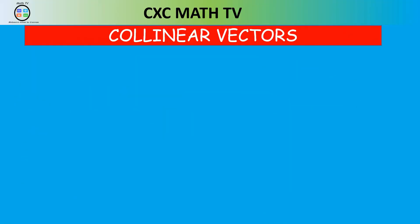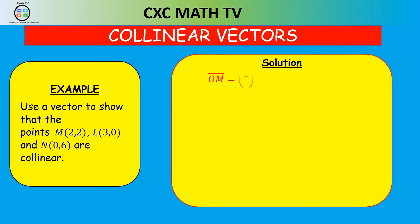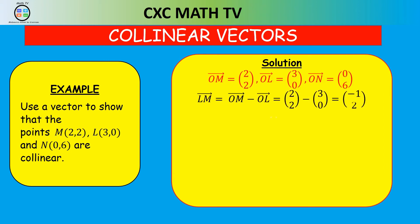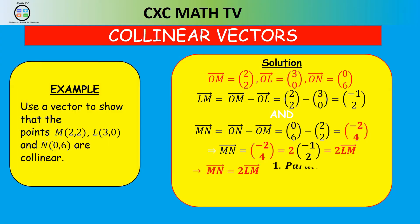Use a vector method to show that points M, L and N are collinear. We write position vectors: OM = (2, 2), OL = (3, 0), ON = (0, 6). Vector LM = OM − OL = (2, 2) − (3, 0) = (−1, 2). Vector MN = ON − OM = (0, 6) − (2, 2) = (−2, 4). Factoring out 2 from MN: MN = 2 × (−1, 2) = 2 × LM.